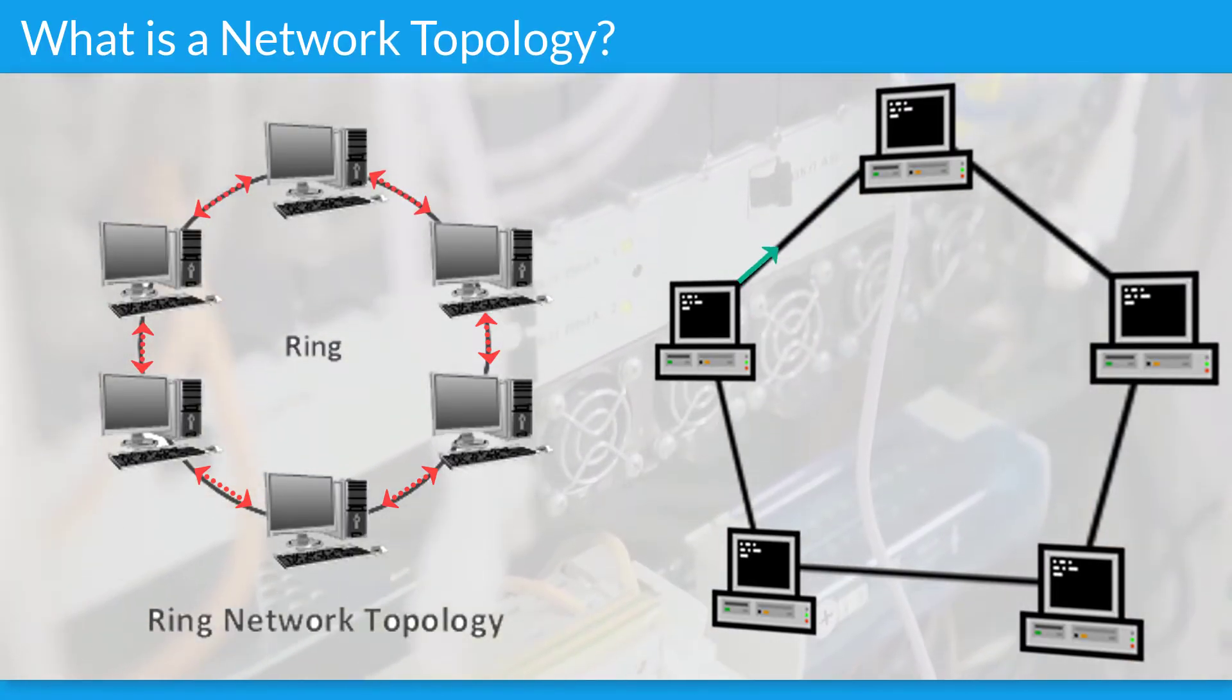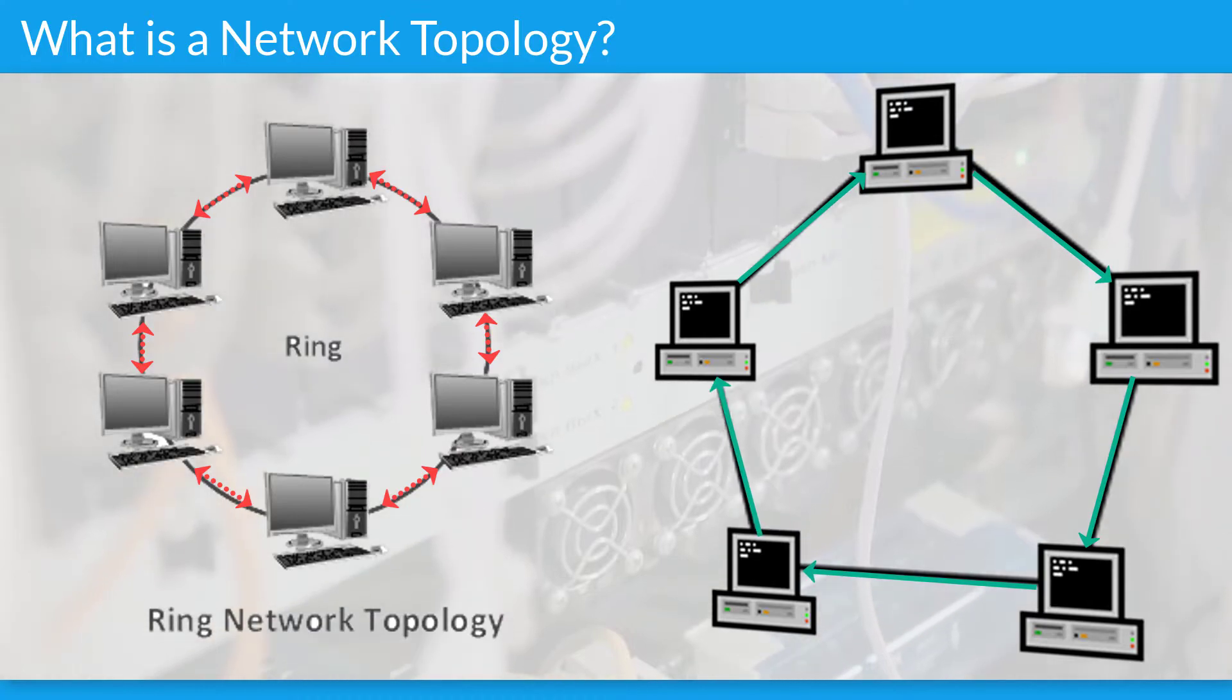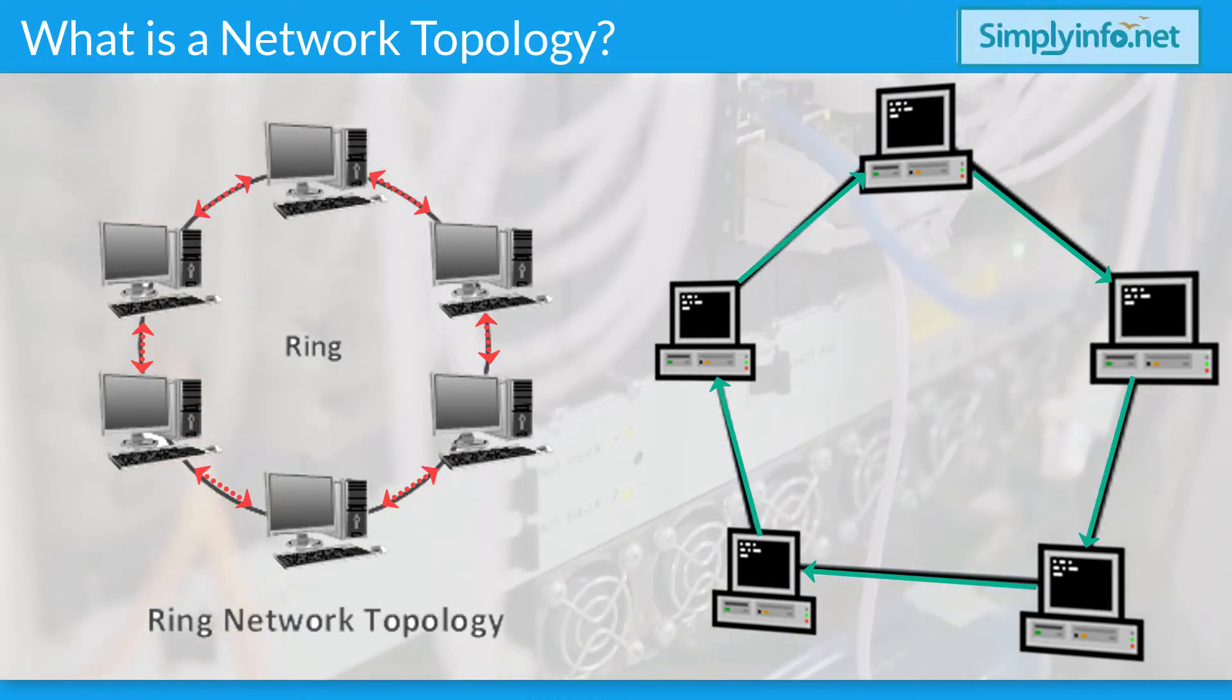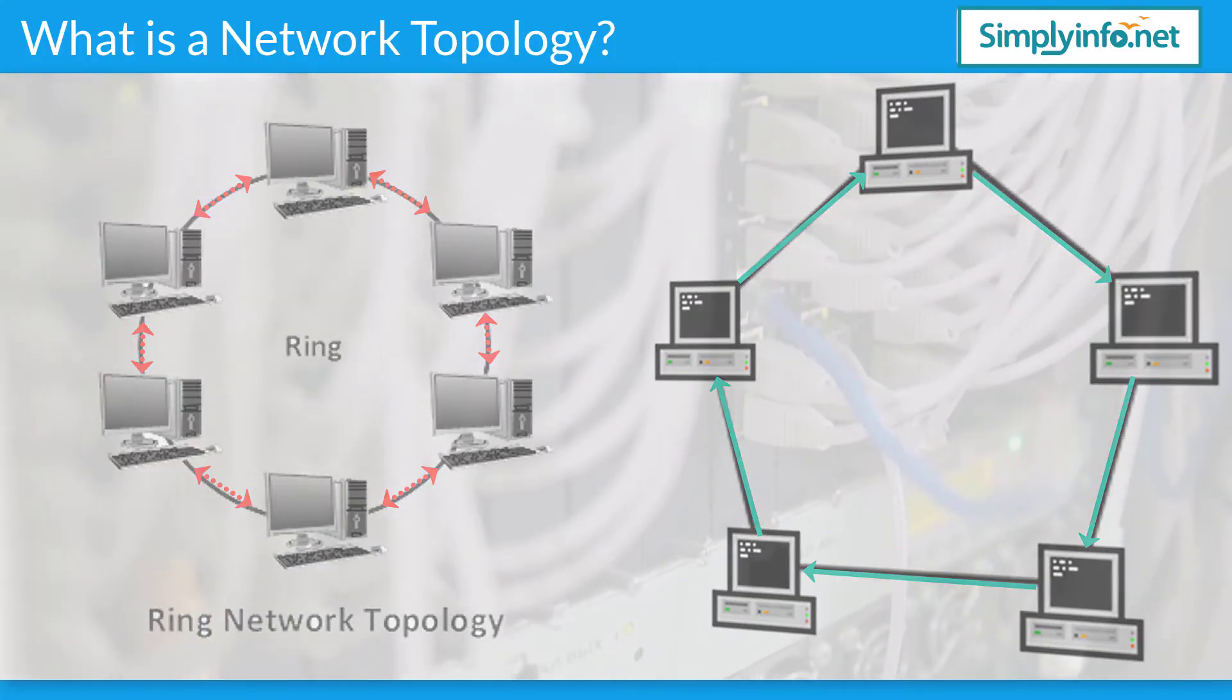If a token ring protocol is used in a star or ring topology, the signal travels in only one direction, carried by a so-called token from node to node.